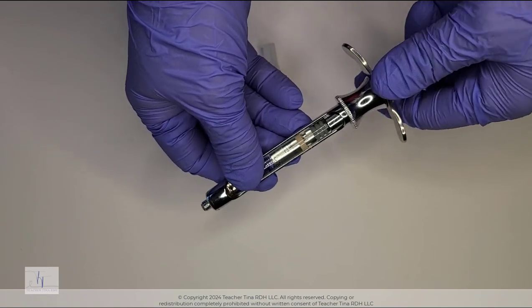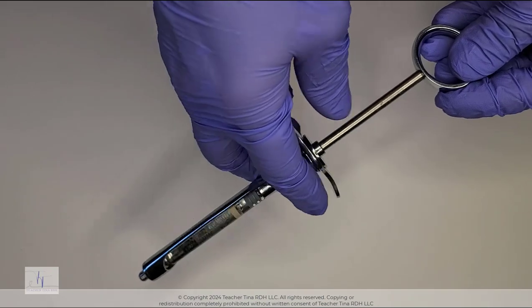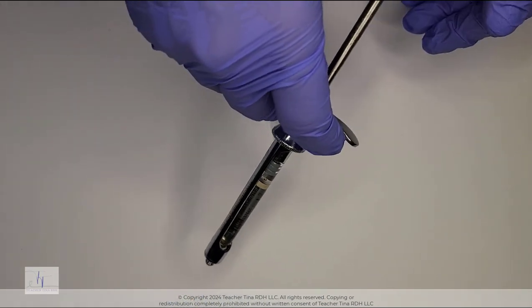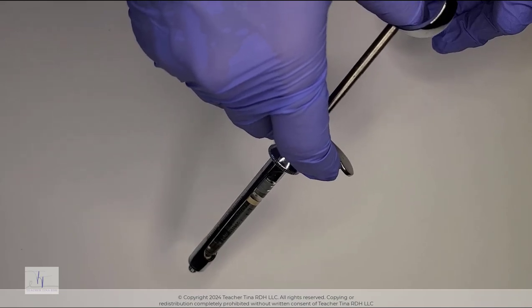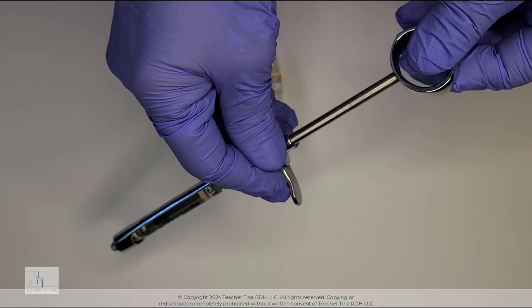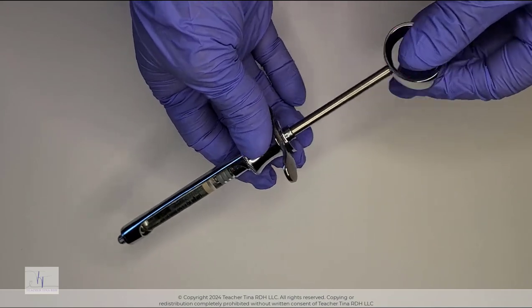Engage the piston by either applying thumb pressure onto the thumb ring to push it into the rubber stopper, or gently palm strike the thumb ring to engage that stopper.